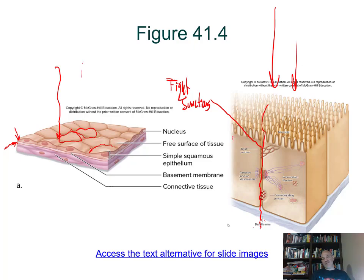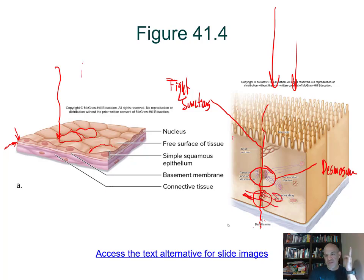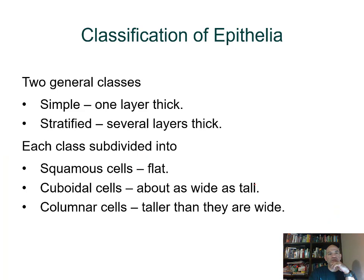Cells also need to be tightly bound together against stretching and pulling forces, which involves desmosomes — another kind of cell junction. Gap junctions allow materials to flow between cells within the tissue. These three major junctions were studied in the cell chapter of Biology 1.